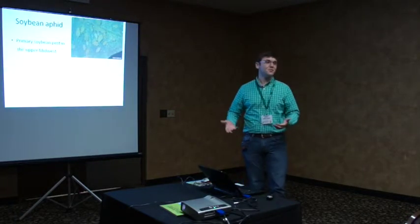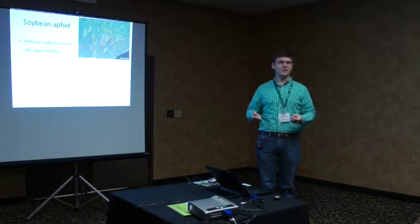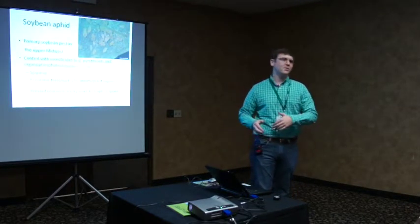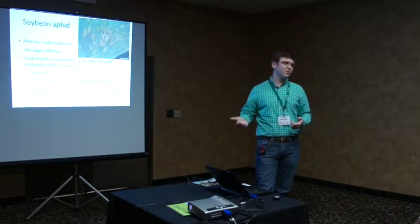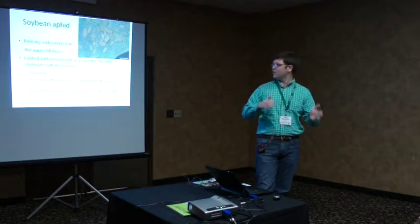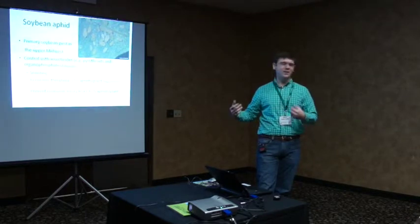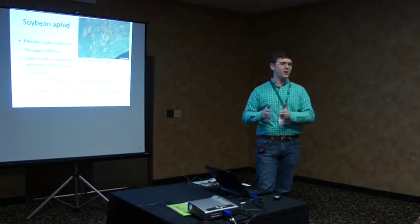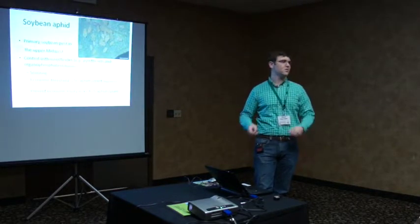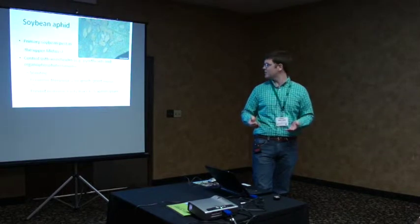Soybean aphid is our primary soybean pest in the upper Midwest. It's primarily problematic because it can reach high population densities and reproduce very quickly on a soybean plant. The main control method is insecticides — pyrethroids or organophosphates for conventional use. Application is only recommended if you scout and find aphids. The economic threshold is 250 aphids per plant, at which point you look into applying insecticide to prevent reaching the economic injury level of 675 aphids per plant, where yield loss would justify treatment.